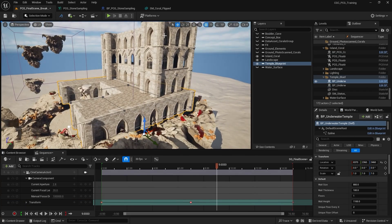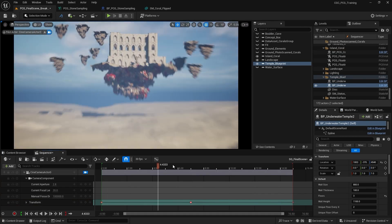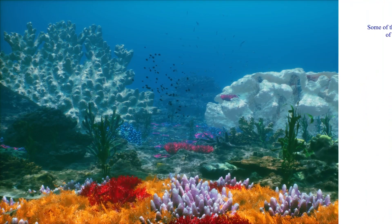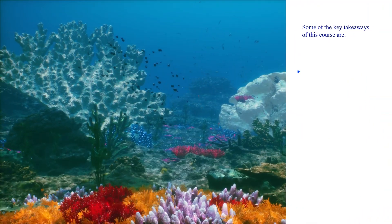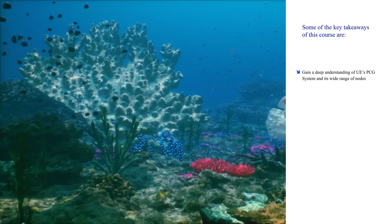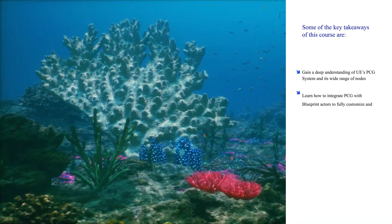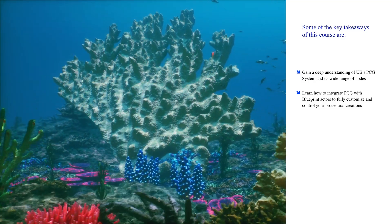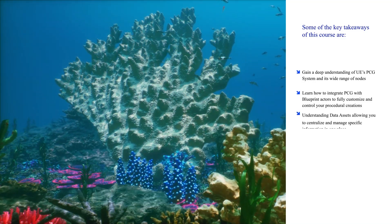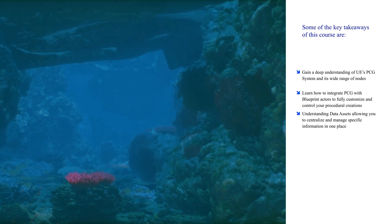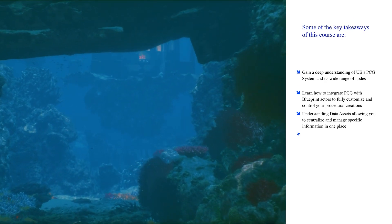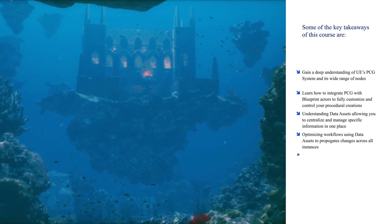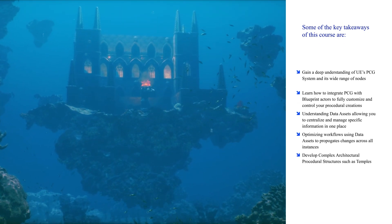Finally, we conclude the course by breaking down a scene demo, reviewing how to apply all the tools and techniques covered to craft a stunning scene. Key takeaways include: a deep understanding of Unreal Engine's PCG system and its wide range of nodes; integrating PCG with blueprint actors to fully customize procedural creations; understanding data assets to centralize and manage specific information; and optimizing workflows by using data assets to propagate changes across all instances.